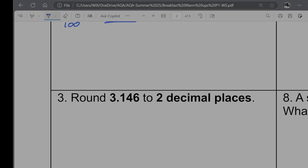Question three. Round 3.146 to two decimal places. So this is the point I'm rounding to. The number behind the four is a six. So it's bigger than five. So I'm going to round it up. So that's going to become 3.15.